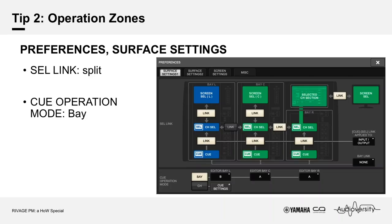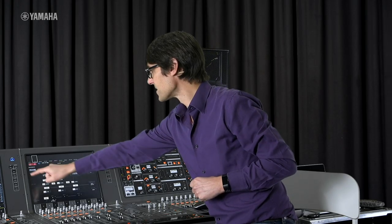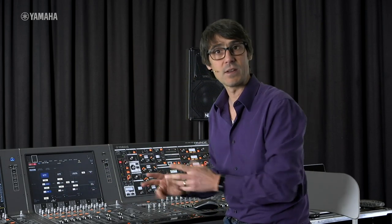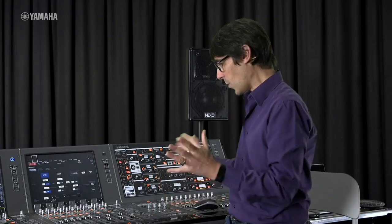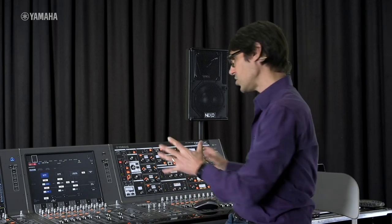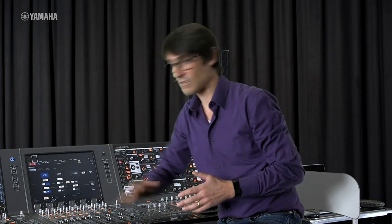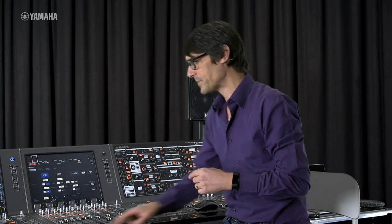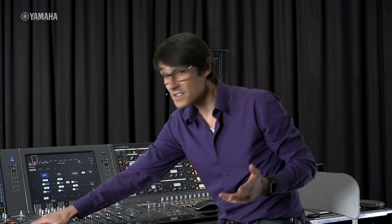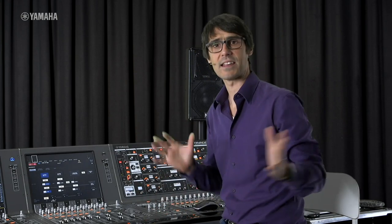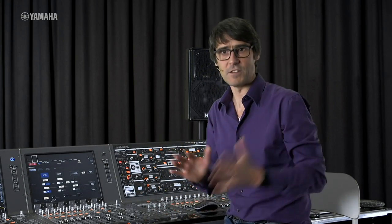Tip number two: operating zones. In Setup > Preferences > Surface Settings, if you break the link, you put the console into two operating zones. So you can have two engineers working at the same time — one on certain bays with selected channel and Q bus A, the other in another section with Q bus B. They can select different channels, listen to different channels, and edit different channels with the screens, while each can still access every function.